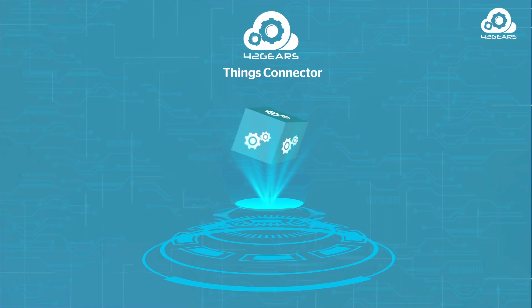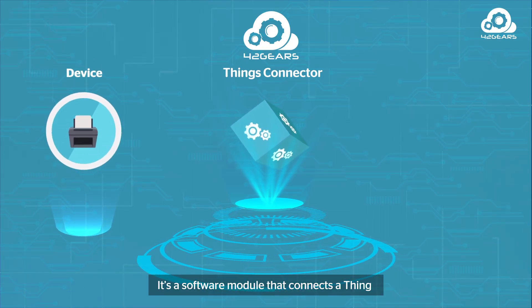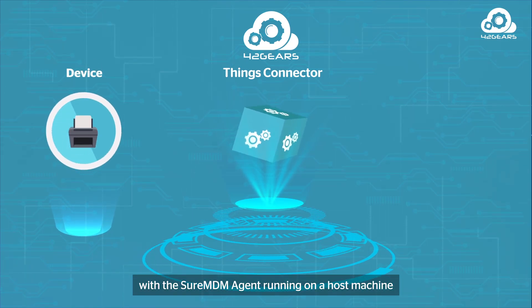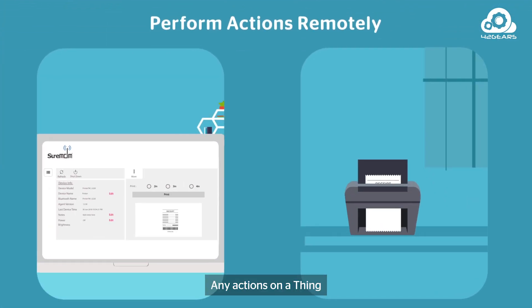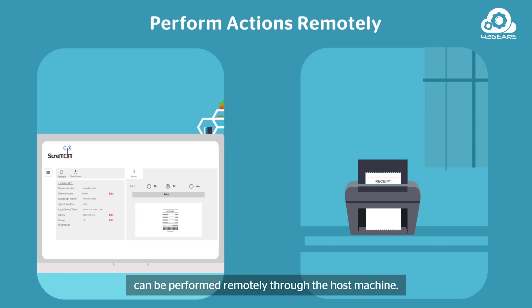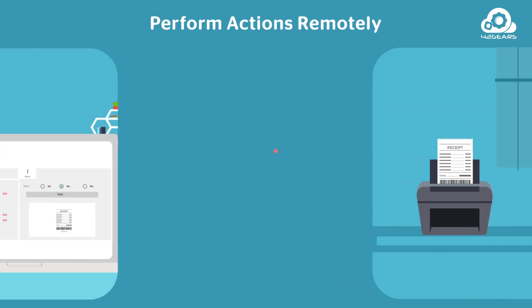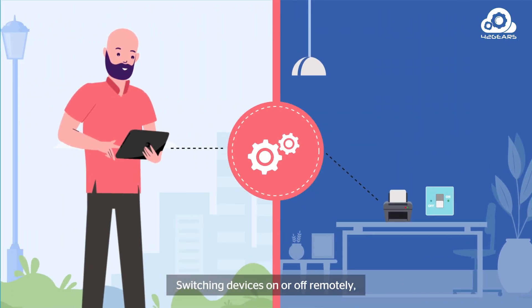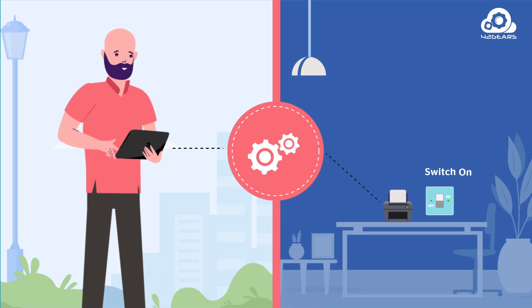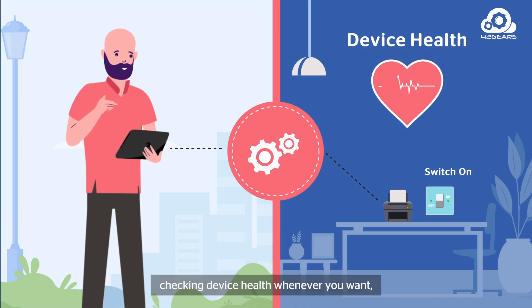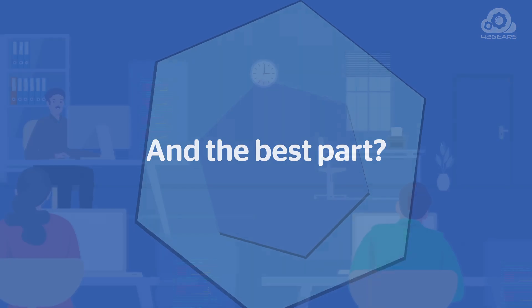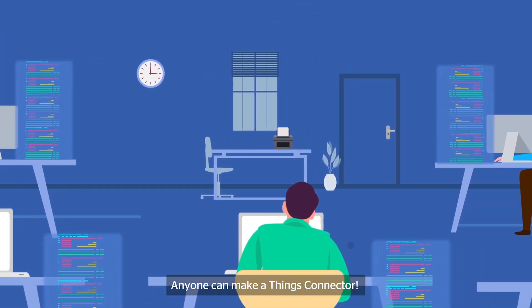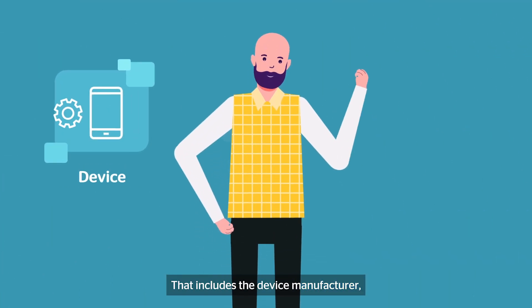The Things Connector is a software module that connects a thing with the SureMDM agent running on a host machine. Any actions on a thing can be performed remotely through the host machine — switching devices on or off remotely, checking device health whenever you want, and more.